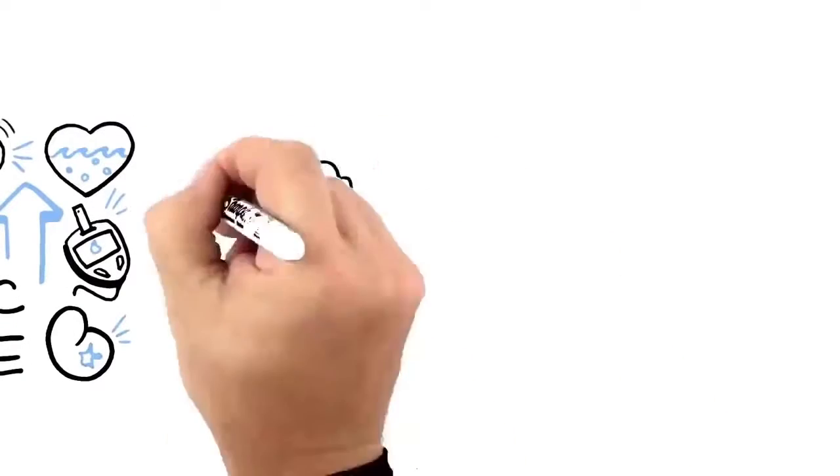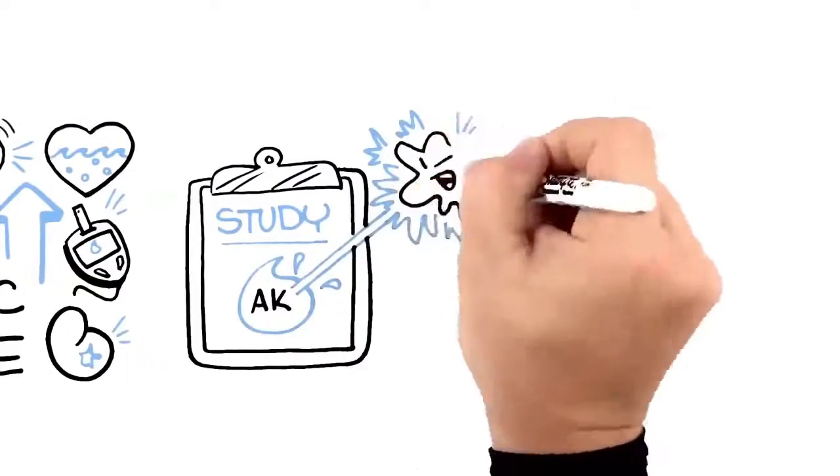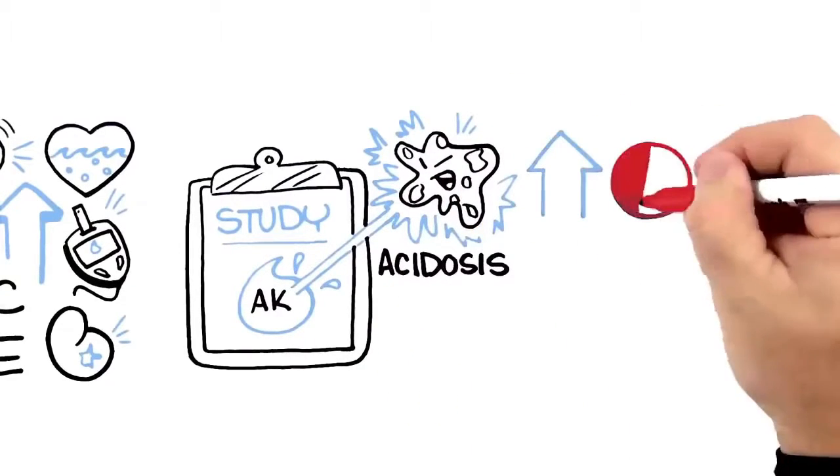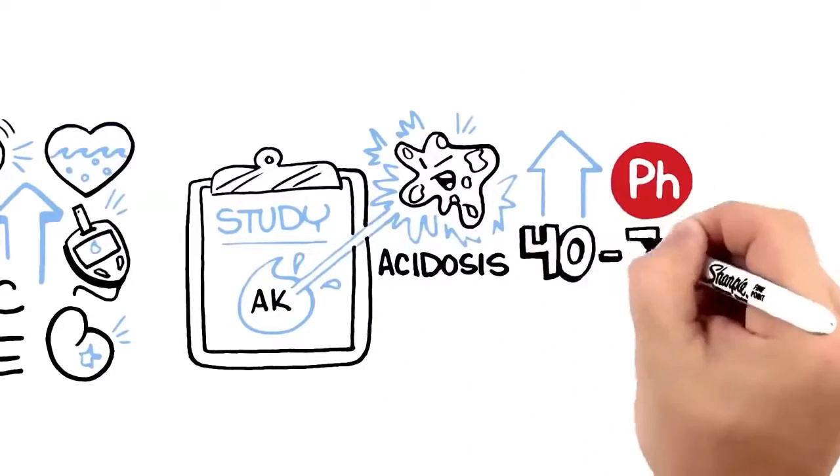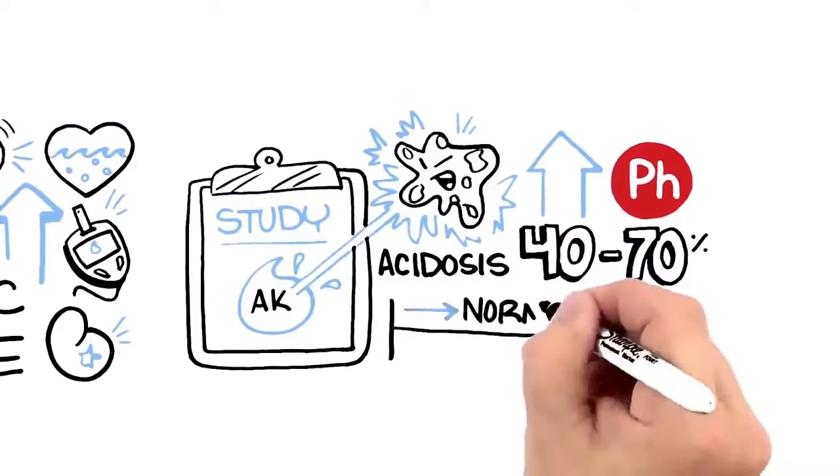A recent clinical study shows that alkaline water can fight harmful metabolic acidosis by raising blood pH 40% to 70% within the normal blood pH range.